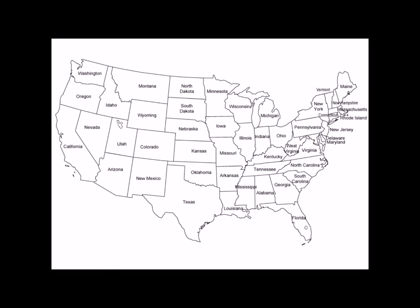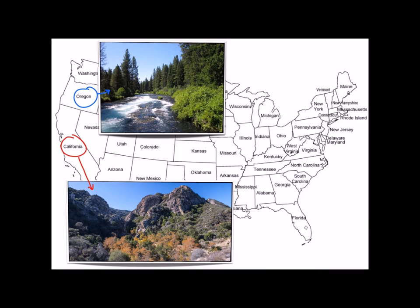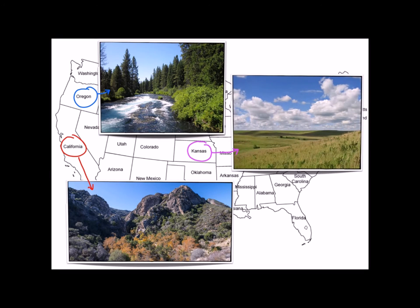When a species has a wide geographic distribution, it encounters a wider range of environmental conditions to which it must adapt. This variation in environmental conditions can result in a corresponding variation in phenotypes. The change in phenotype reflects the changing nature of natural selection under each locality. To demonstrate, consider three populations of a species living in the United States: one in California's chaparral shrubland, one in Oregon's temperate forest, and one in Kansas's grassland. The geographic variation within the species in response to these changes may result in the evolution of clines, ecotypes, and geographic isolates or subspecies.